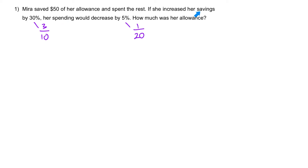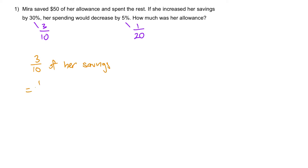So, if she were to save $10 more, that $10 must come from the spending, so she would need to spend $10 less. If she increased her savings by $50, she would have to spend $50 less. What this sentence is trying to say is: 3 out of 10 of her savings is equal to 1 out of 20 of her spending. It means this fraction is equal to this fraction.